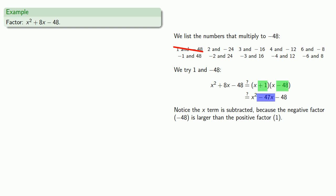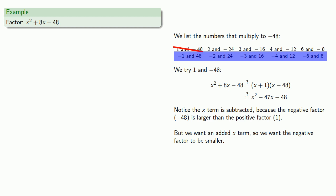But we wanted an added x term. We wanted to get plus 8x. That means we should start looking among the factors where the negative factor is smaller than the positive factor. We can also ignore the factors where the negative factor will be larger.